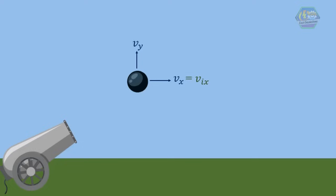While the velocity along y direction is approaching zero. When the velocity along y direction is equal to zero, the cannonball is at its maximum height from the ground.